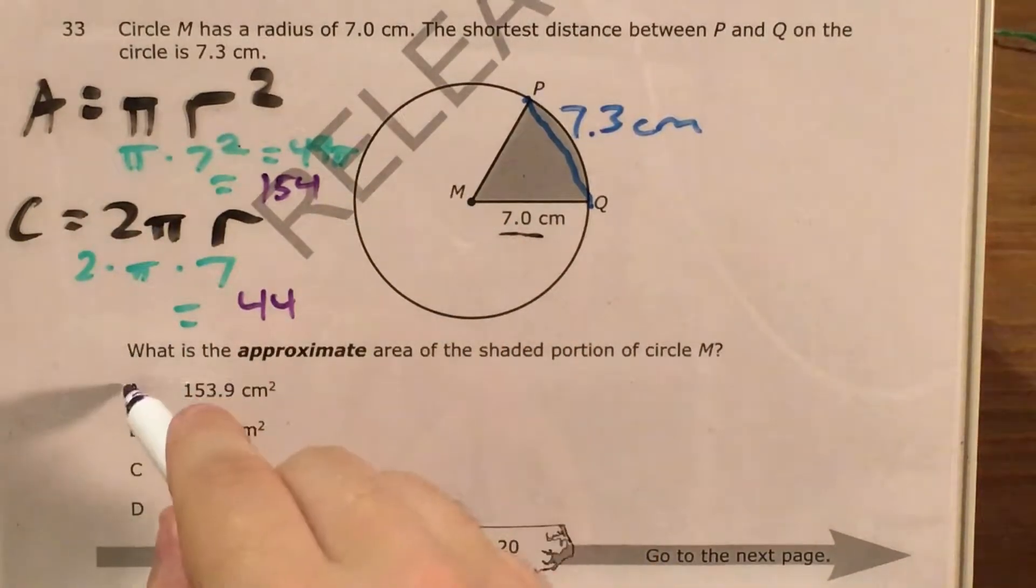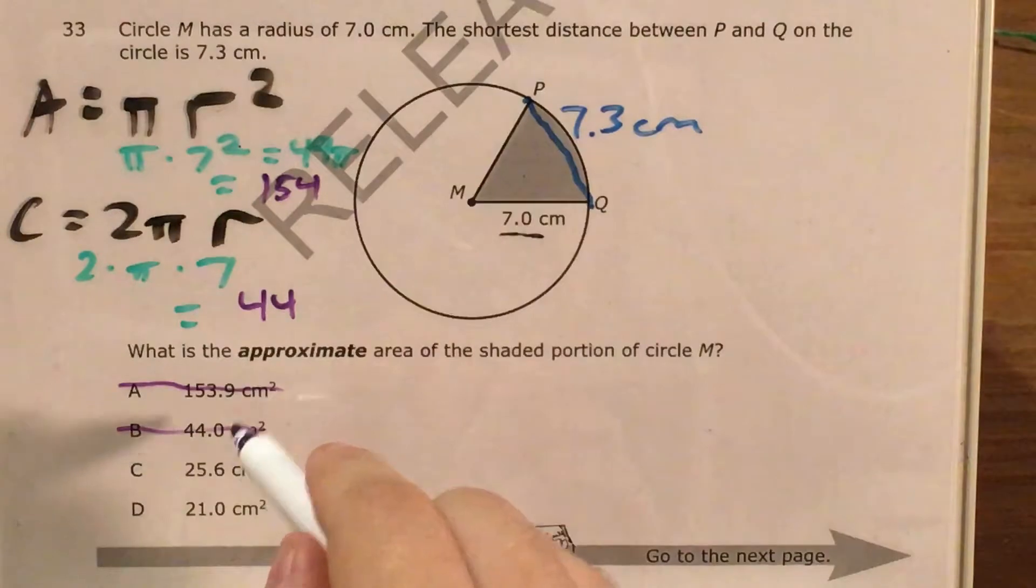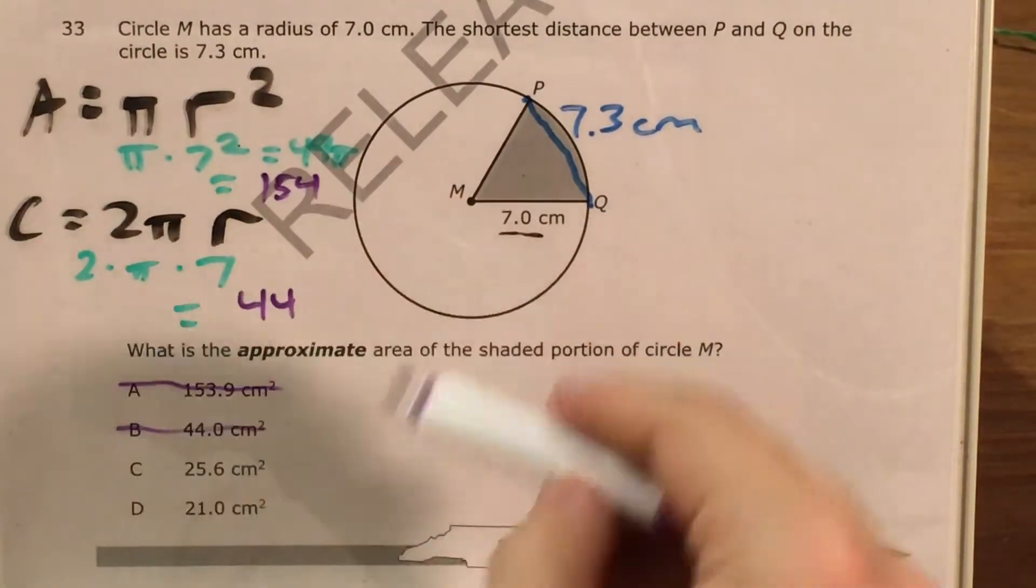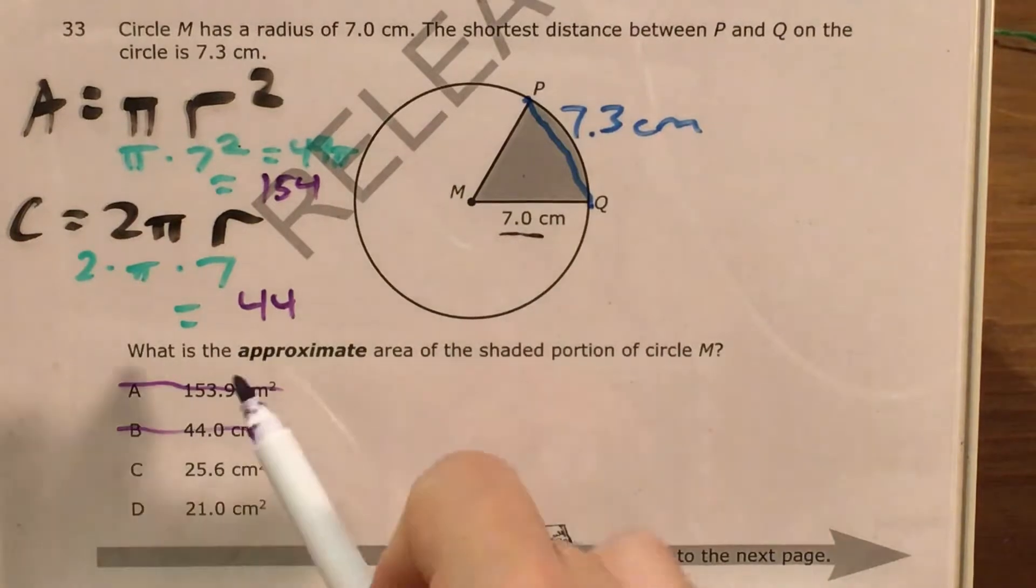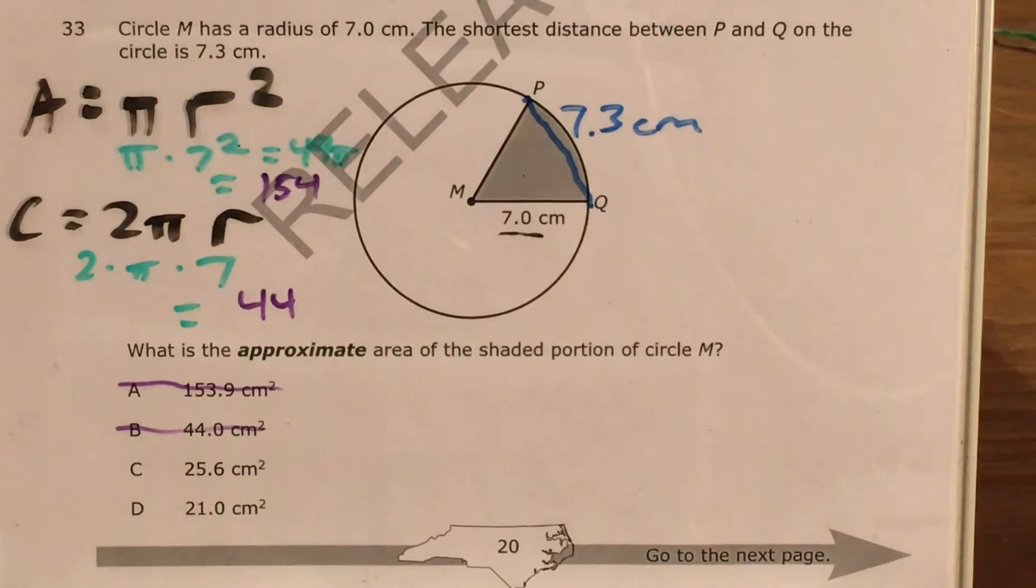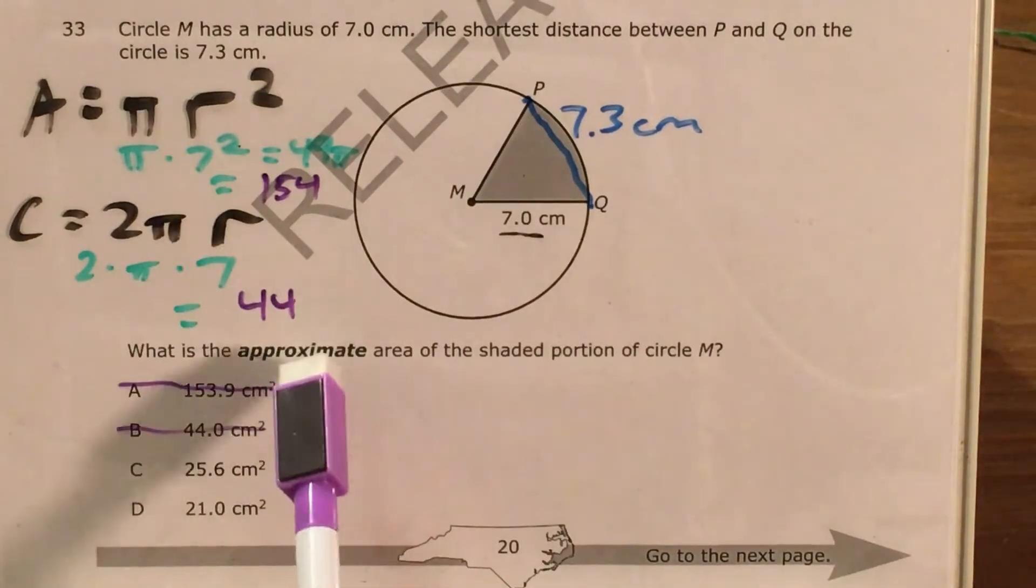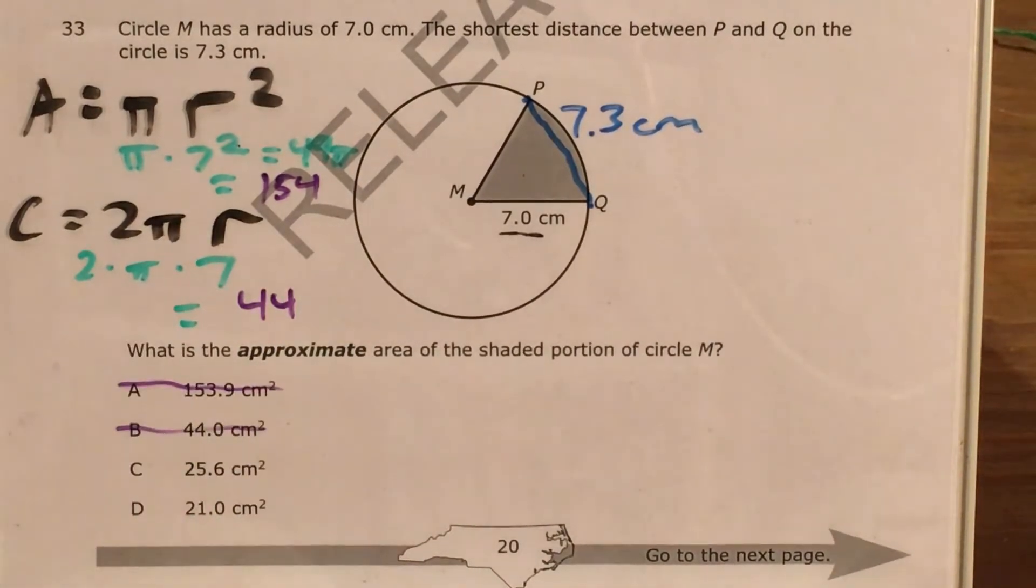At this point, I can actually go ahead and knock out choice A and choice B because they are both numbers that I get on my way to solving this, but I haven't actually gotten there yet. And so I know with essentially no doubt that my answer is not going to be 153.9. It's not going to be 44.0.